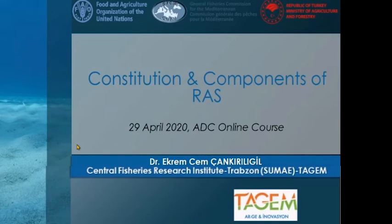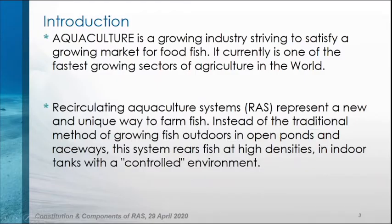I want to start by expressing the main components of recirculating aquaculture systems. After these basic definitions, we will evaluate site selection, constitution and RAS management. Aquaculture is a growing industry, striving to satisfy a growing market for food fish. It currently is one of the fastest growing sectors of agriculture in the world.